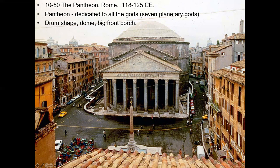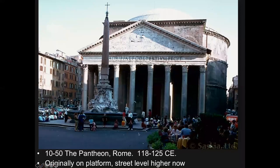When it was originally made, it wouldn't have looked this way — you wouldn't have been able to see the exterior barrel form. What you would see is a facade very similar to the Greek temples we looked at before, a big front porch. When you look at it today, because Rome has been continuously occupied, the street level is much higher and has eaten up a lot of the stairs and platform it was originally on.